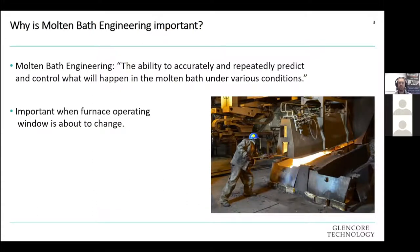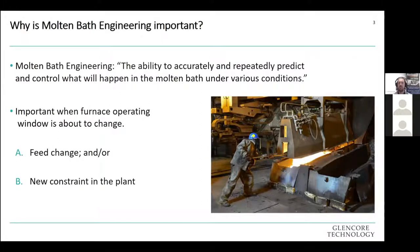It's important to know when your furnace operating window is about to change, and there are two main reasons. A feed change — you're getting a new material, or existing materials or fluxes might be changing in composition. And the second reason is a new constraint in the plant — an upstream or downstream operational bottleneck, such as restricted off-gas volume, oxygen supply issues, equipment bypassed for maintenance, or limitations within the furnace itself, like a maximum temperature or feed rate constraint, or volume lost due to accretion.